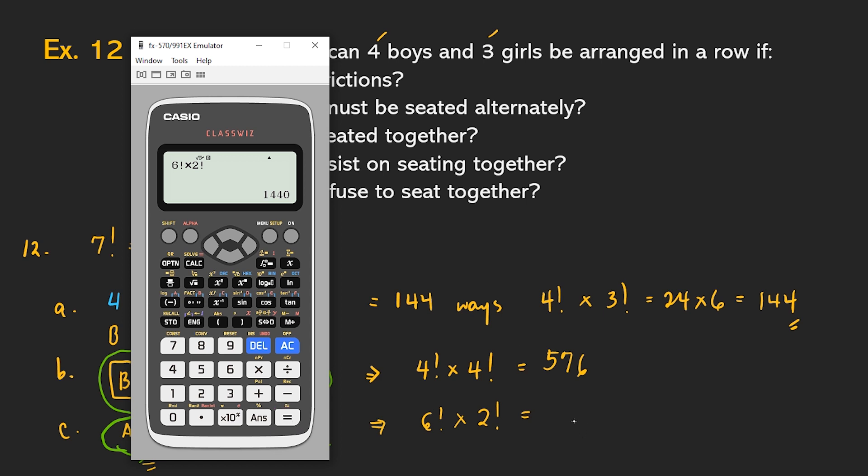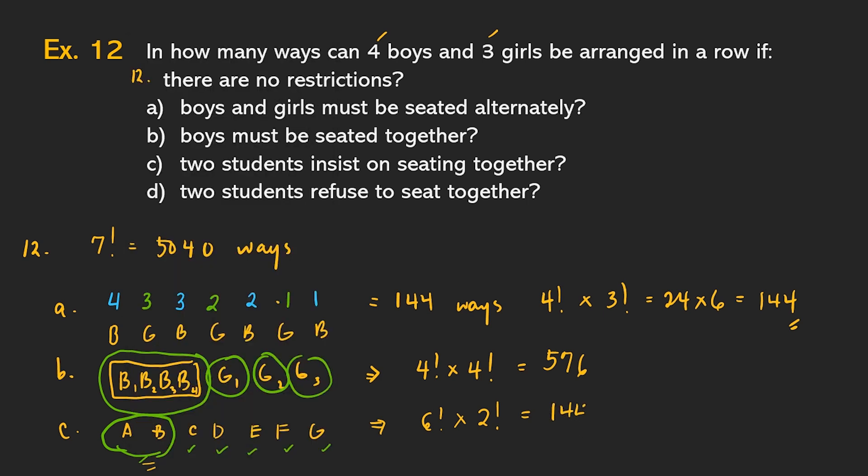So, there are 1,440 ways of doing that if two students insist on sitting together. That's for letter C. Now, for letter D, two students refuse. Ayaw naman nilang magtabi. So, I will leave this question to everybody. Please comment down below if you know the answer for letter D. Nasolv na natin yung magkatabi sila. But this time, I want you to solve how many different ways na yung dalawang students na yun ay ayaw nilang magkatabi. Please do not forget to comment down below. Thank you.